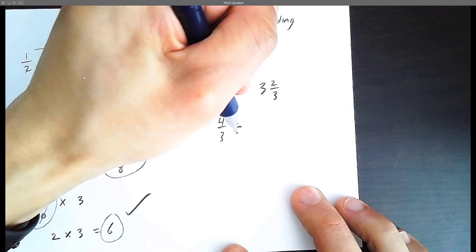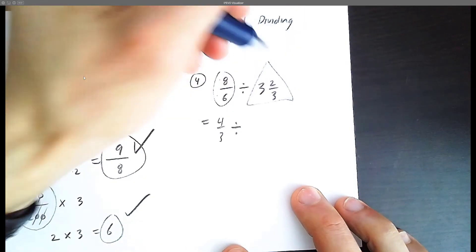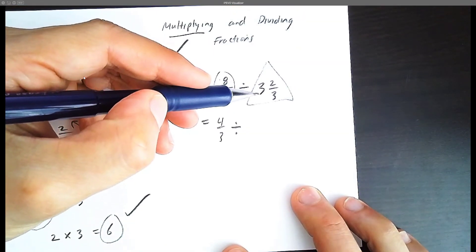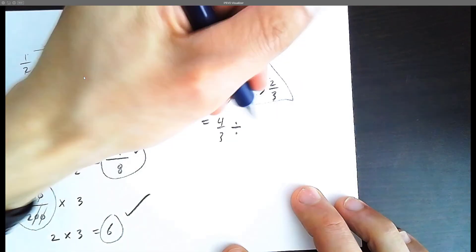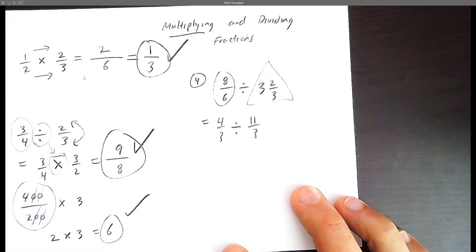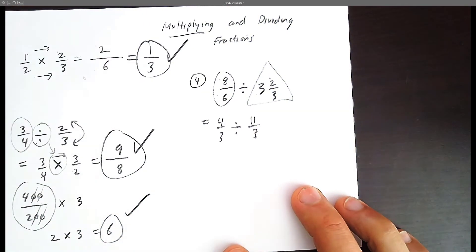Is it equivalent to 8 divided by 6? I'm just going to leave this division symbol alone and focus on converting this to an improper fraction. 3 times 3 is 9, plus 2 is 11, over 3. And now this kind of looks like question number 2.